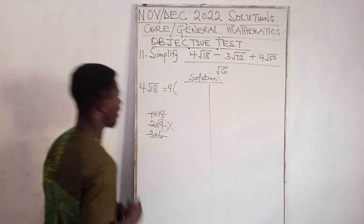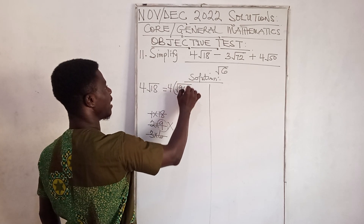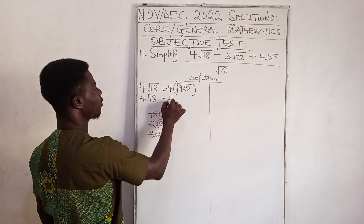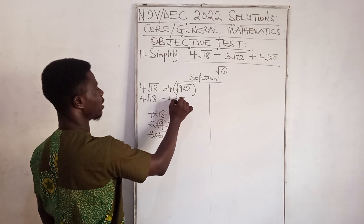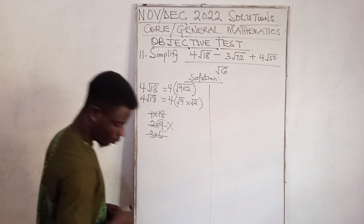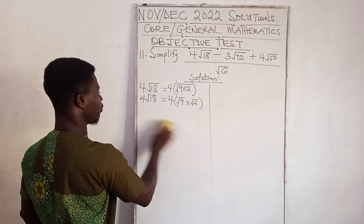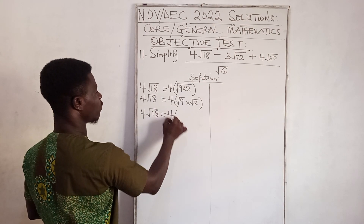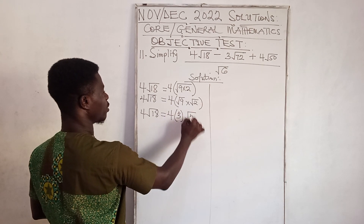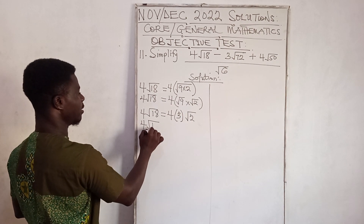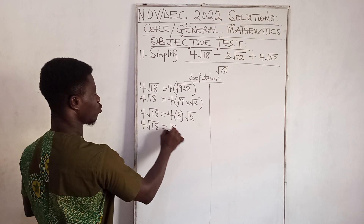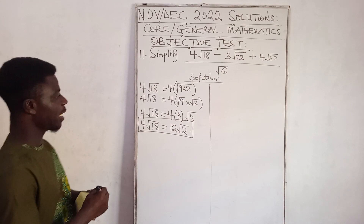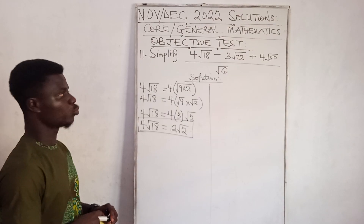So I can write 4√18 as 4 times √(9×2). Taking the square root of 9 gives 3, so we have 4 times 3 times √2, which equals 12√2. In simplest form, 4√18 = 12√2.